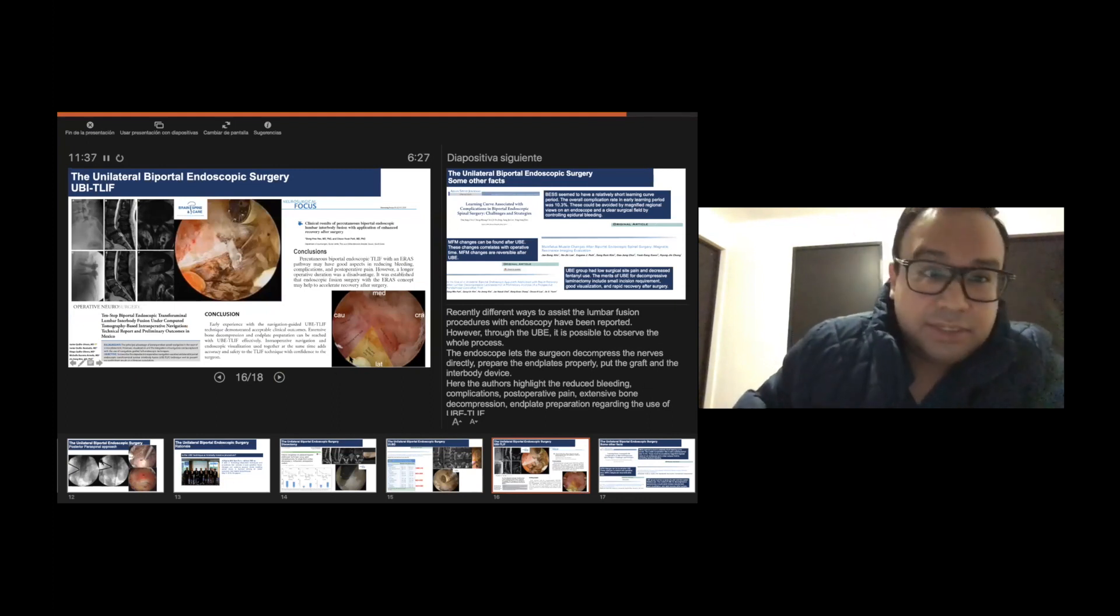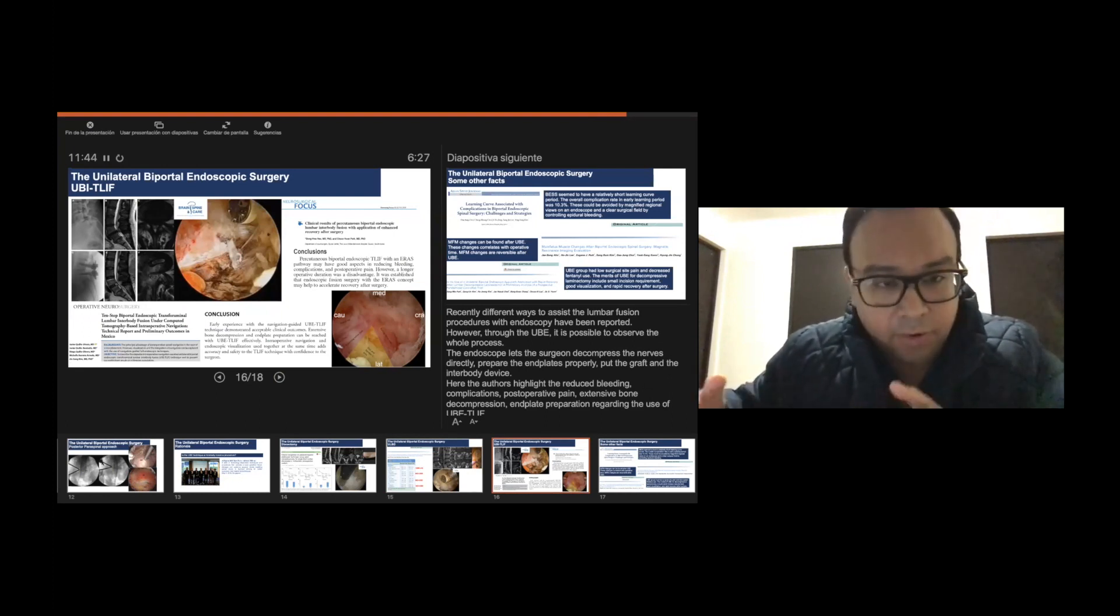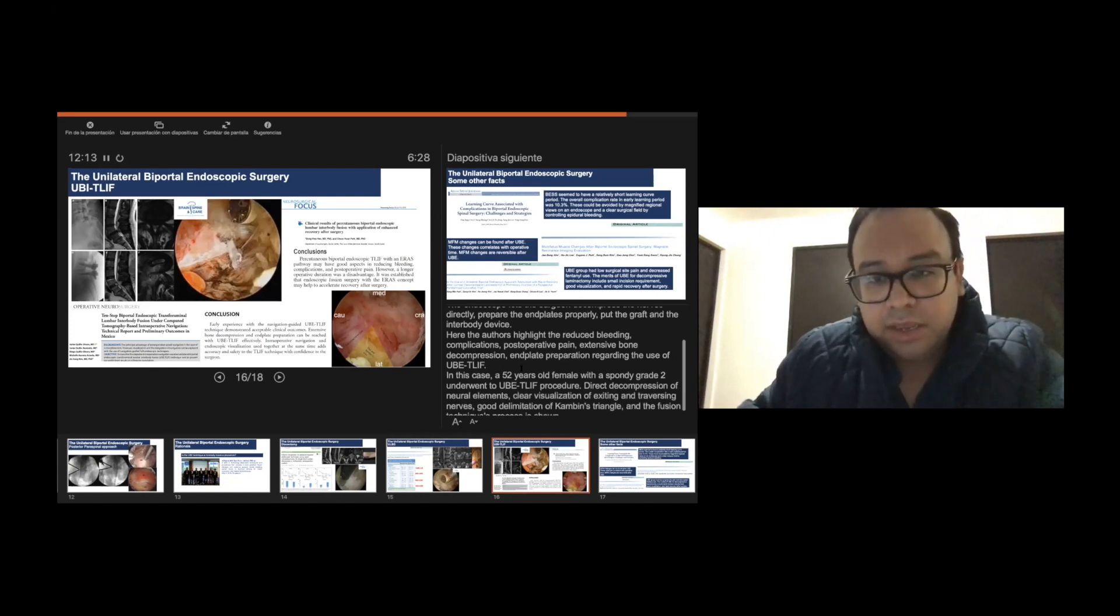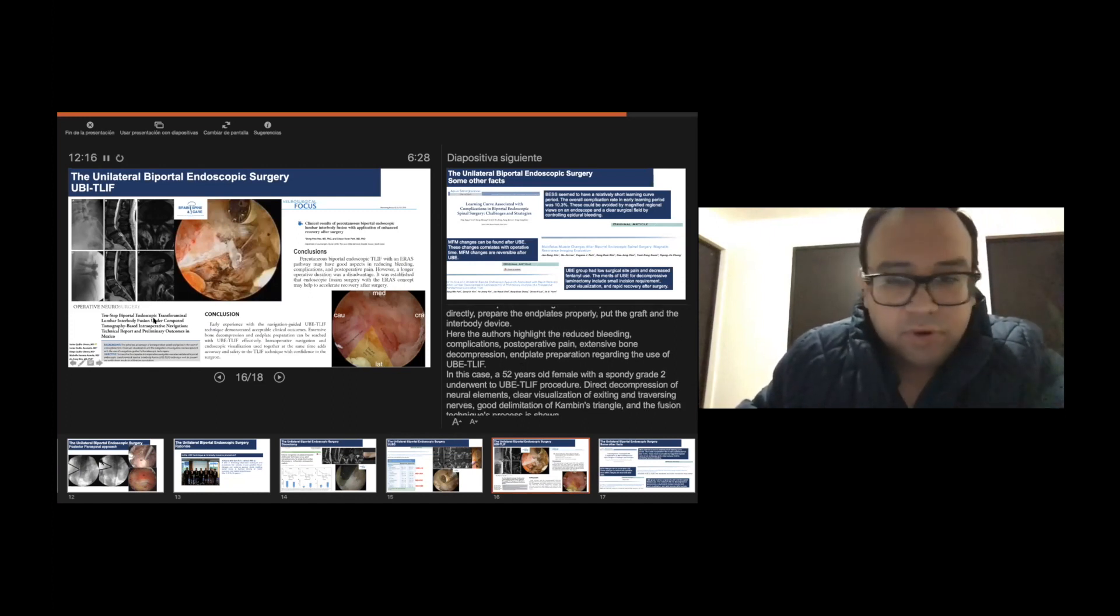Recently different ways to assist the lumbar fusion procedures with endoscopy have been reported in uniportal techniques and then also in biportal techniques. However, through the UBE, through the biportal technique, it is possible not only to assist the process of fusion, we can observe all the process of fusion during the surgery. The endoscope lets the surgeon decompress the nerves directly, prepare the endplates properly with the grafting and the interbody device properly. The authors have highlighted reduced bleeding complications, postoperative pain, extensive bony decompression, and plate preparation regarding the use of UBE transforaminal lumbar fusion.